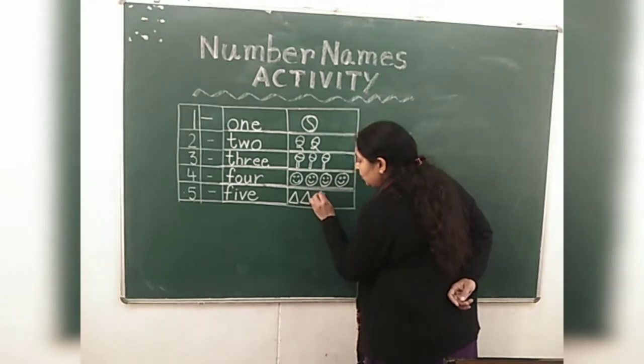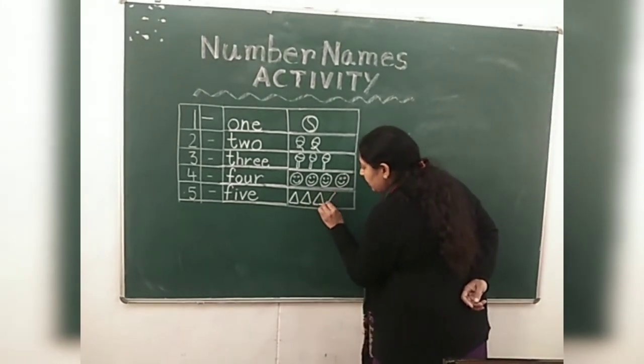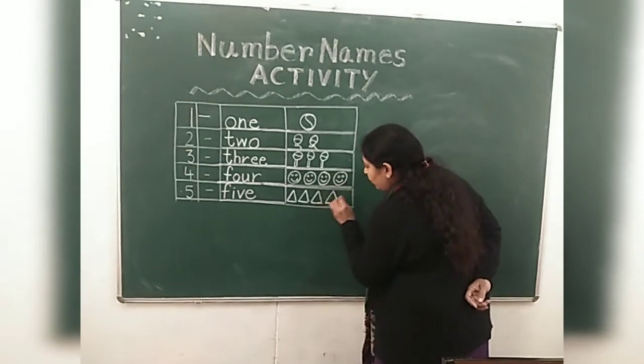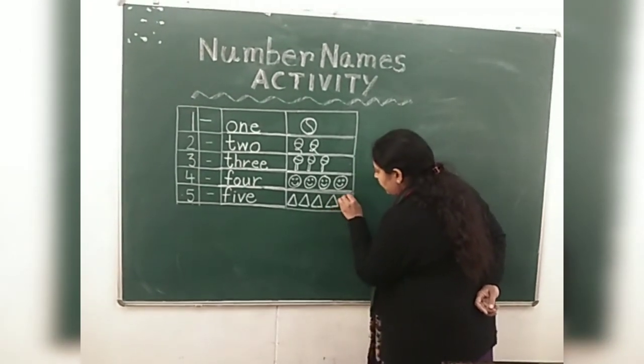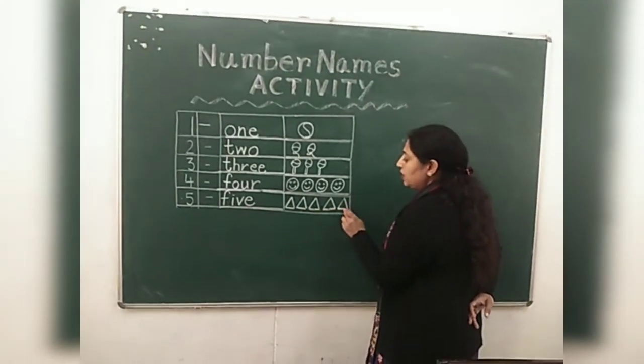One, two, three, four, five. One, two, three, four, and five. One, two, three, four, five.